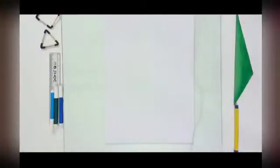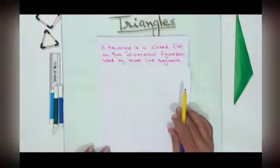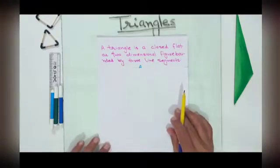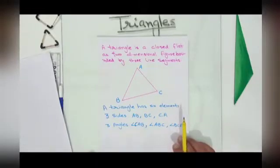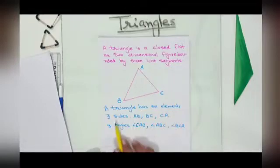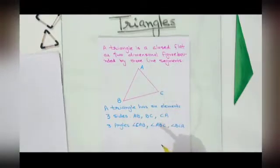Hello students. In this video we would learn a few properties of triangles which will be very useful in the topics coming in the next videos. First of all, what is a triangle? A triangle is a closed flat or two-dimensional figure bounded by three line segments. A triangle has six elements, that is three sides and three angles.